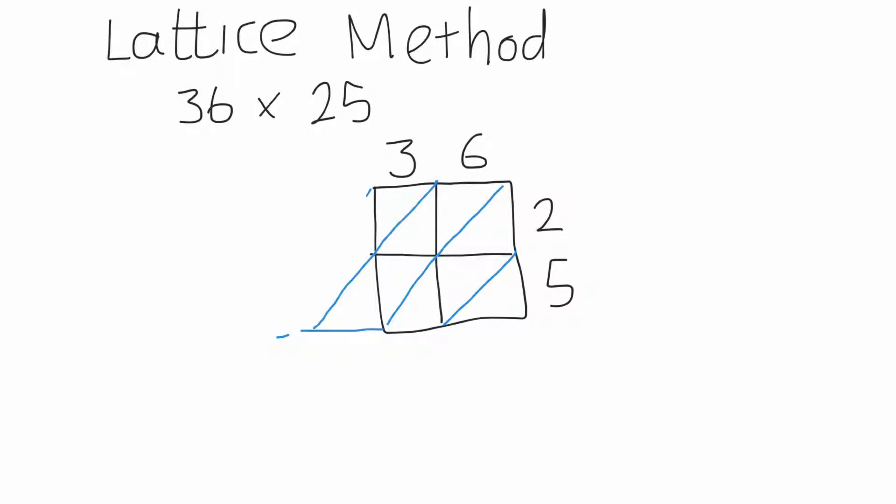That's set the grid up. So what we do is we multiply the different boxes, so this box first. We're going to do 3×2, it is 6, and then 6×2 is 12. So each box has like tens and units, and we'll do 3×5 is 15, 6×5 is 30.